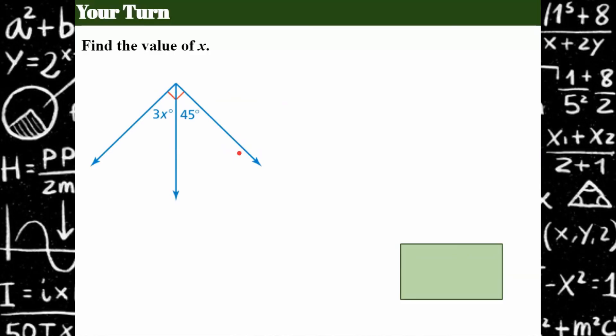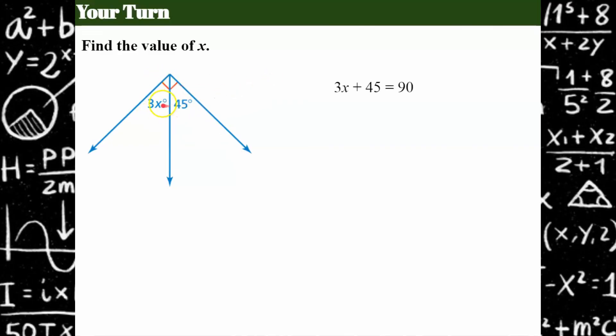Your turn. Go ahead and pause. Come back when you're ready. Welcome back. So we have two angles here that are complementary because this red box tells us they're 90 degrees. So 3x plus 45 is equal to 90. Subtract 45 from each side, and 3x equals 45. Divide each side by 3, and x is equal to 15.